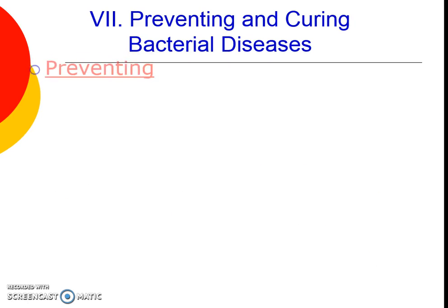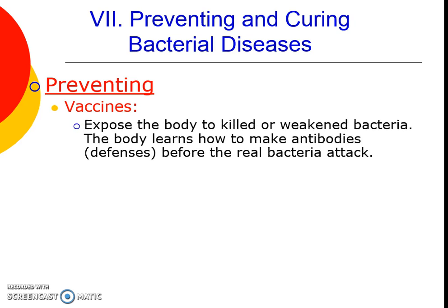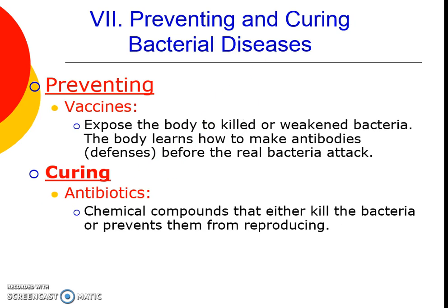How can we prevent and cure bacterial diseases? For prevention, the first step is vaccines — just like vaccines for viruses but working a little differently. We expose the body to a killed or weakened version of the bacteria, and the body learns to make antibodies or defenses against the real bacteria. To cure bacterial infections, we have antibiotics — a chemical compound that kills bacteria or prevents them from reproducing, often by breaking the bacteria's cell membrane. We have learned that misusing antibiotics can cause the bacterial population to become resistant if a random mutation occurs in the population.